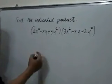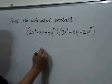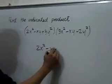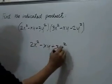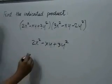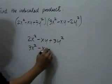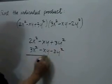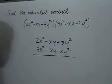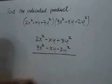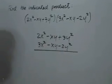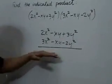I'm going to write the first factor here and the second one below it. Next, I'm going to multiply each term of the first factor by 3x² and then write the result here.